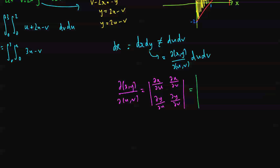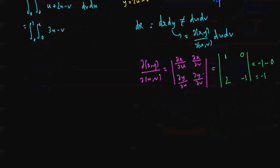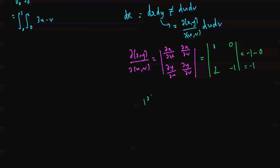We need to work out what dx du is. I know what x is in terms of u, so dx du is just the derivative, which is 1. dx dv, there's no v in terms of x, so it's 0. dy du, y is equal to 2u minus v, so the partial derivative with respect to u is 2, and the partial derivative with respect to v is negative 1. So that's 1 times negative 1 minus 2 times 0, which equals negative 1. So the absolute value of the Jacobian is equal to positive 1.